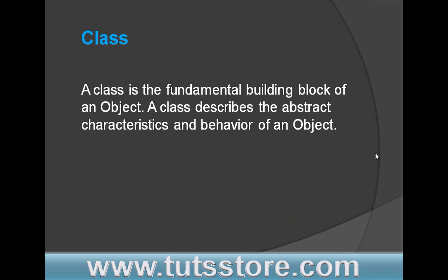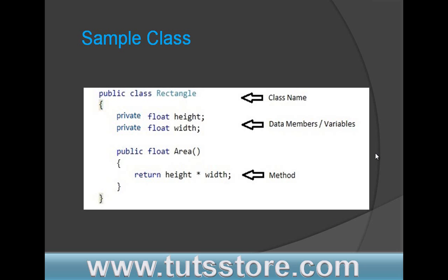So first of all, what is a class? A class is the fundamental building block of an object. A class describes the abstract characteristics and behavior of an object. This is a simple class where Rectangle is a class name. This is the class keyword and public is an access specifier. These two variables are data members and there is a method.